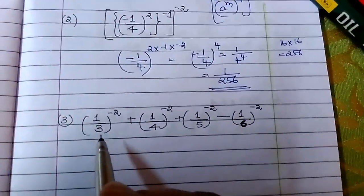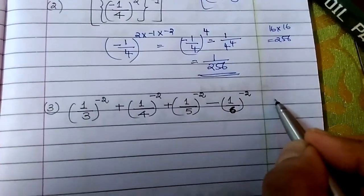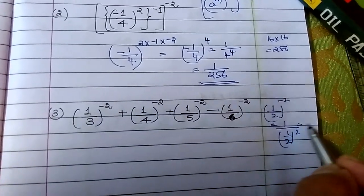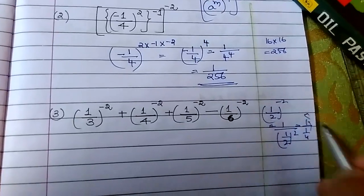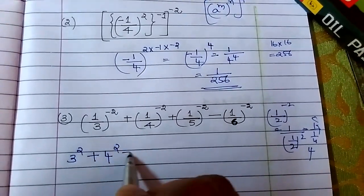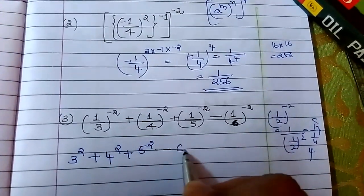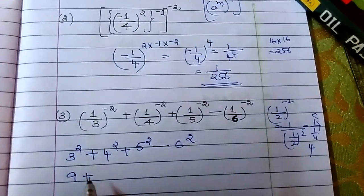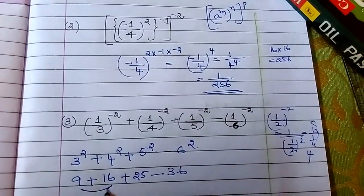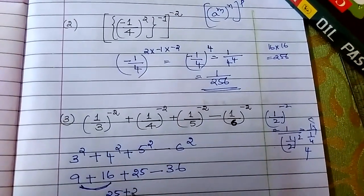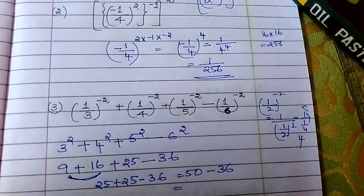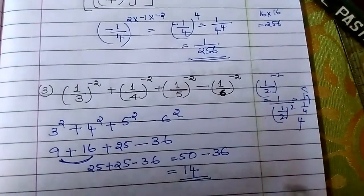Now next one: 1 by 3 to the power minus 2. We know 1 by 2 to the power minus 2 is 1 by 1 by 2 square. So here it is 1 by 1 by 4, which becomes 4. So the expression becomes 3 square plus 4 square plus 5 square minus 6 square. That is 9 plus 16 plus 25 minus 36, which equals 25 plus 25 minus 36, giving 50 minus 36 equals 14. So the answer is 14.